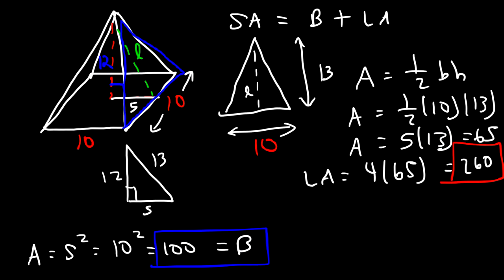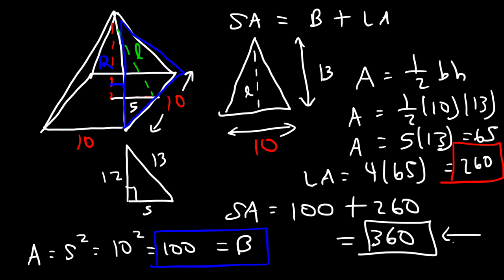So to calculate the total area, it's going to be the area of the base, which is 100, plus the lateral area, which is 260. So that's going to be 360 square units. So that's how you can calculate the total surface area of a pyramid.